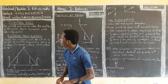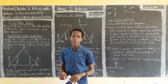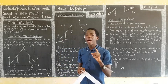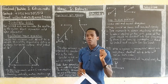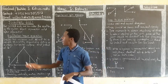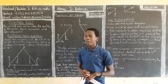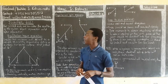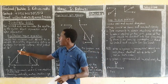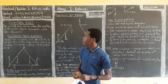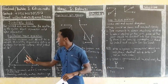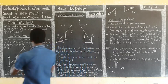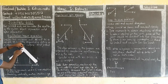For jointed rods, we consider the equilibrium of the system before separation and after separation. To get the solutions for these problems, we consider equilibrium before separation and equilibrium after separation. Consider a uniform rod — a uniform rod is a rod where weight acts at the middle of that rod. We have rods AB and BC of weights W1 and W2 respectively, resting on a rough horizontal surface and jointed at B.